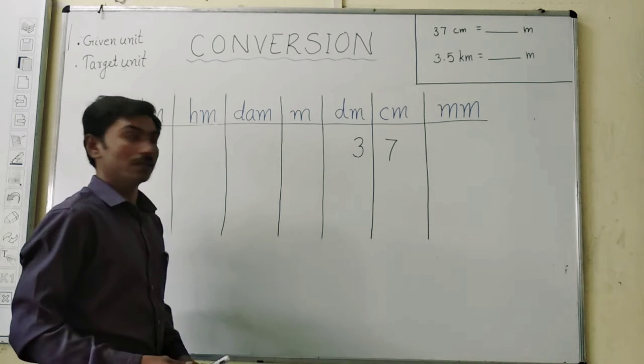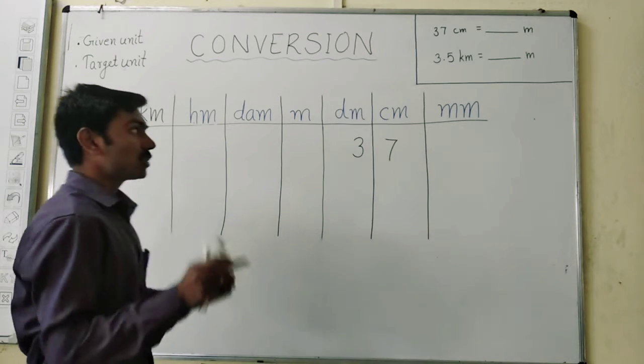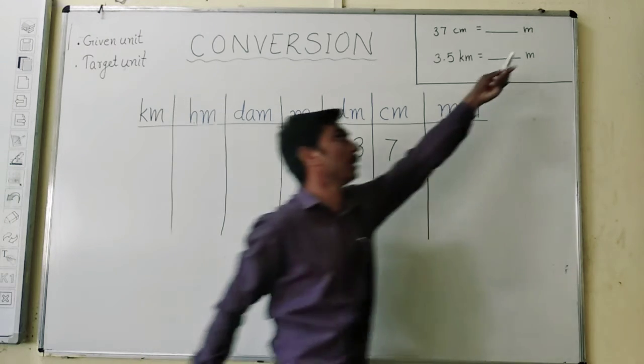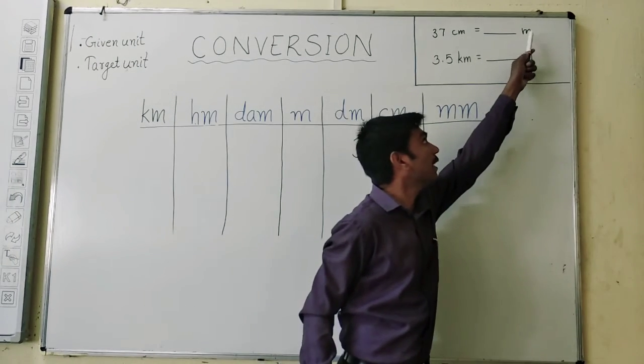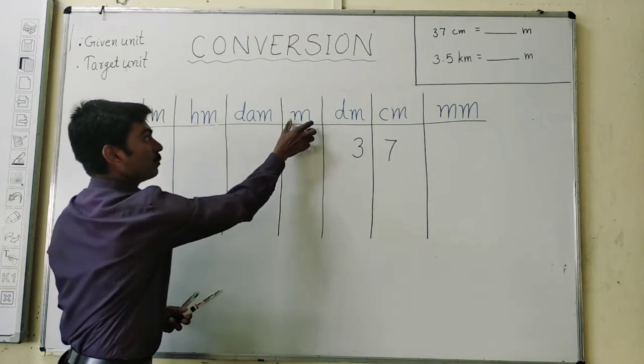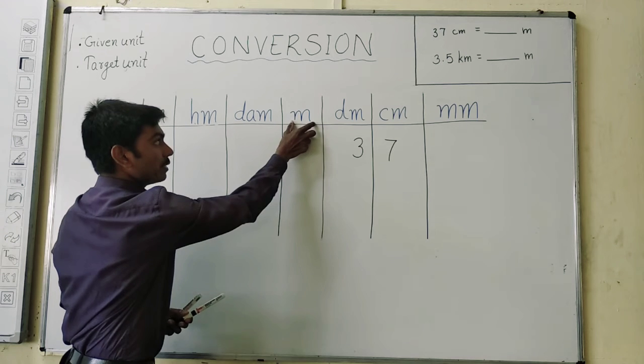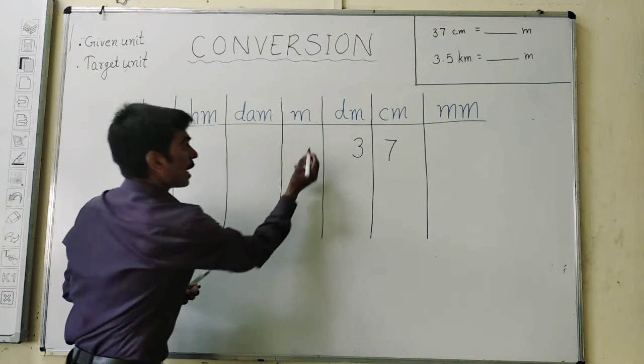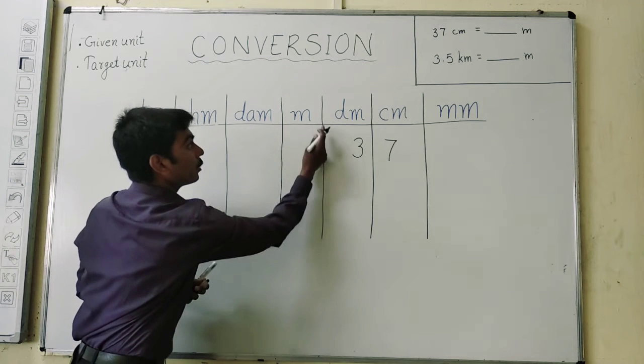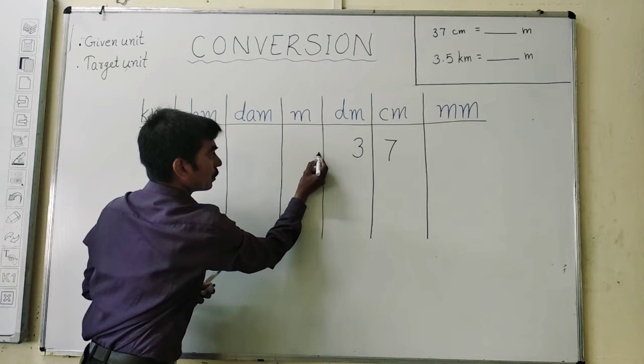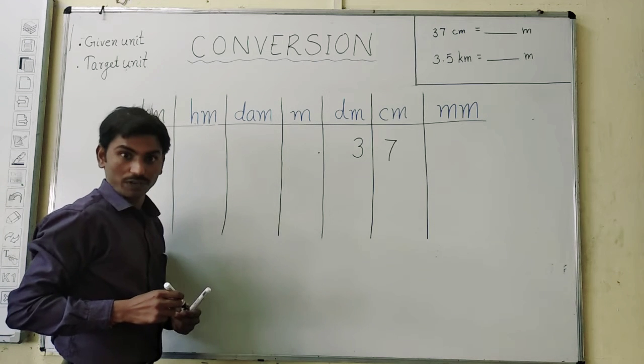The second step is to just give a decimal point just after the target unit. Our target unit is meter. In this table, find out where target unit is, means meter. Here is meter. So we have to give a decimal point right towards it. We will give decimal point just after it.